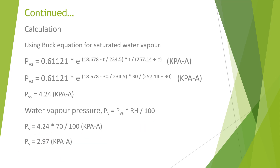Relative humidity is 70%. Using the Buck equation for saturated water vapor pressure, PbS, after putting in 30 degrees Celsius, it comes out as 4.24 kPa absolute. Water vapor pressure Pb equals PbS multiplied by RH divided by 100, which comes out as 2.97 kPa absolute.